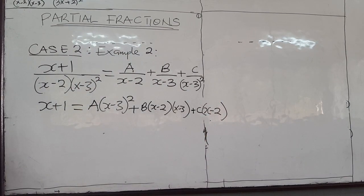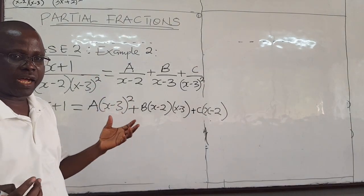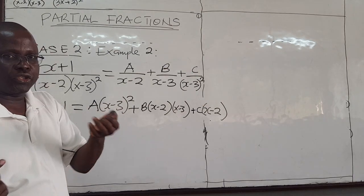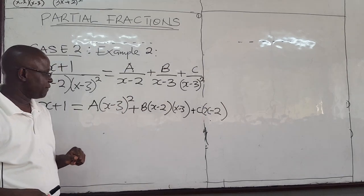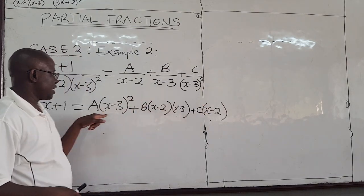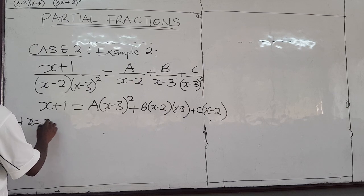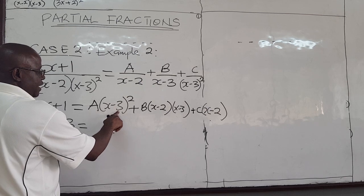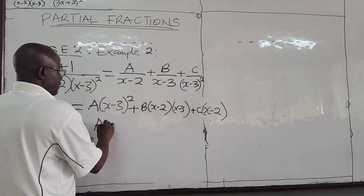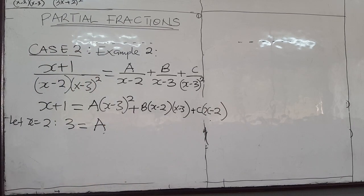So now here you have to be clever. You could still expand. You can expand and compare the coefficients and all of that, but that will be longer. So I prefer to choose some values. If I choose 3, I'll cancel these guys and I'll just solve for C. If I choose 2, this goes, this goes, and I'll solve for A. So it's easier. So x is equal to 2. Put 2 here. If you have 3, 2 minus 3 negative 1 squared is positive 1. So I have A. 2 minus 3 is 0. This goes to 0. This goes to 0. So I just have A straight away.